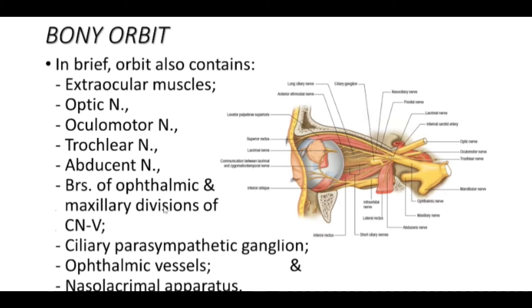At the medial canthus, there is the ciliary ganglion — the parasympathetic ganglion that supplies parasympathetic nerves to the lacrimal gland for lacrimation. These sympathetic and parasympathetic nerves also supply the intrinsic muscles of the eyeball, that is, the ciliary muscles.